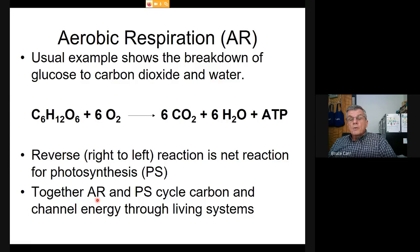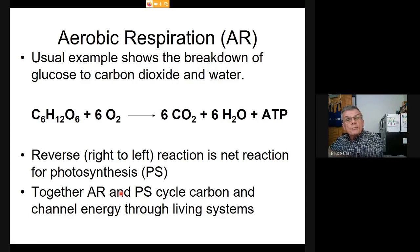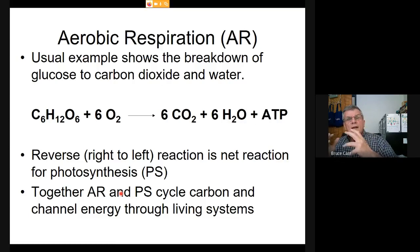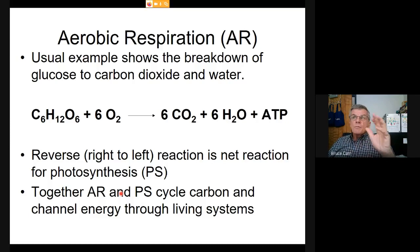Together, aerobic respiration and photosynthesis cycle carbon through the system. Carbon truly cycles: we take CO₂ out of the air, build it up into reduced carbon like glucose, break it down to make ATP, then build it back up. The mineral carbon does cycle. Energy arrives as sunlight, moves through different chemical forms, and when glucose is broken down to CO₂, some energy is captured as ATP and spent doing work; 60% of the energy in making ATP is released back into the universe.